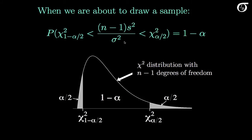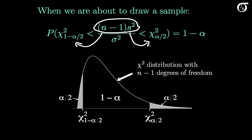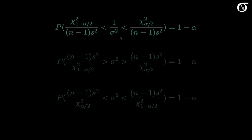Now we're going to isolate sigma-squared, because we want a confidence interval for sigma-squared. It's important to note that sigma-squared is not a random variable — it is a fixed unknown quantity that we are trying to estimate. This quantity in the middle is a random variable because the sample variance s-squared is a random variable; the sample variance would vary in repeated sampling. We need to isolate sigma-squared, and first I'm going to divide through by n-1 times s-squared.